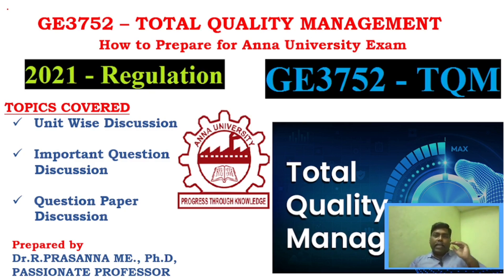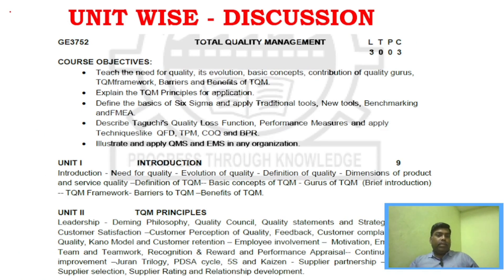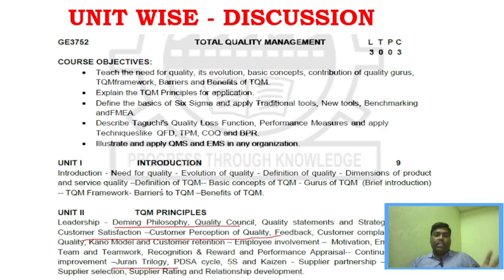In this subject, you can aim to answer all five questions including Part C — all six questions — which is definitely possible. Starting with unit-wise discussion: Unit 1 is very simple. In the 2021 regulation, Unit 1 covers basic concepts such as the TQM philosophy, customer satisfaction, quality evolution, and barriers of TQM. That is more than enough for Unit 1.